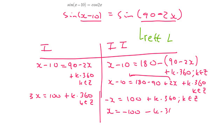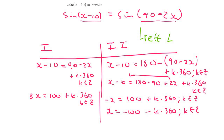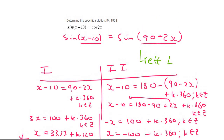Divide everything by negative to get x alone: x = −100 − k·360. For the quadrant one equation, divide everything by 3: x = 33.33 + k·120. It's very important that you divide the k·360 term as well, giving k·120. Up to here this is called the general solution, but in this question they gave us an interval from 0° to 180°, so we need to plug in values of k.